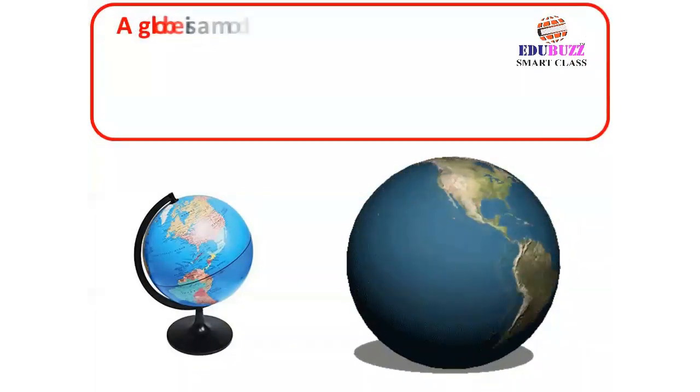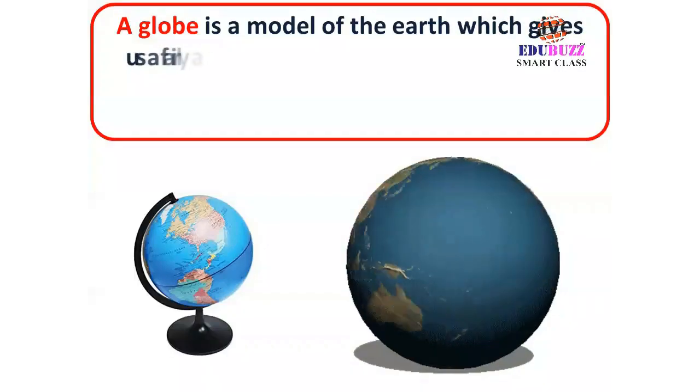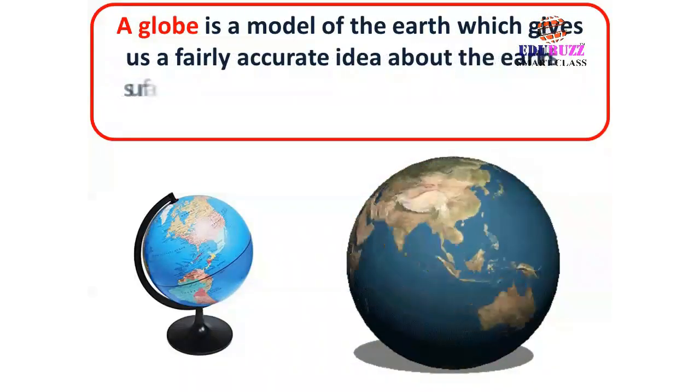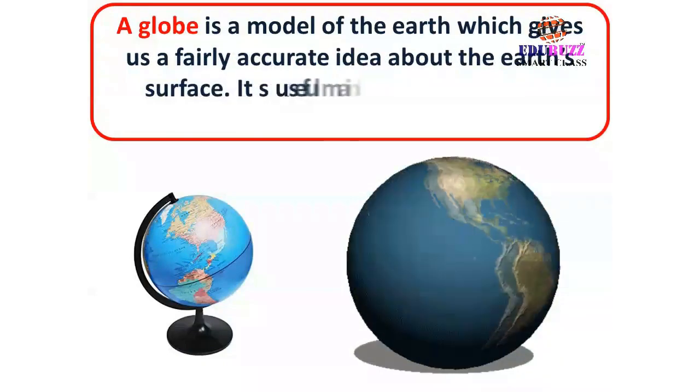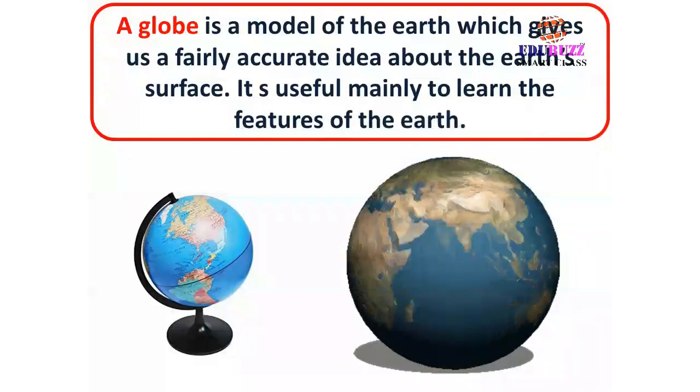A globe is a model of the earth which gives us a very accurate idea about the earth's surface. It's useful mainly to learn the features of the earth.